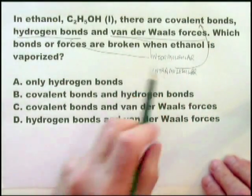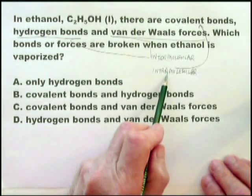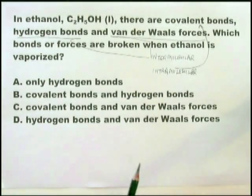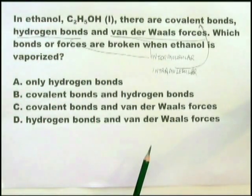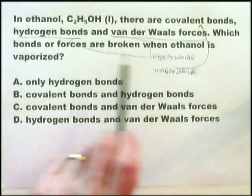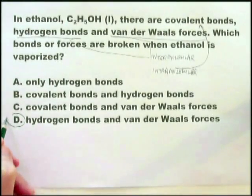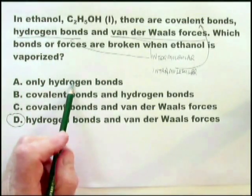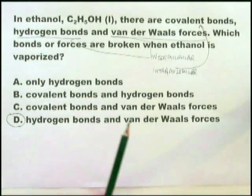Intermolecular refers to the bonds and forces between molecules. Intramolecular refers to the bonds within molecules — covalent bonds are intramolecular. So it's easy to see what happens when ethanol boils or vaporizes: which bonds or forces are broken? Hydrogen bonds and van der Waals forces. Anything with covalent in it is out. Both hydrogen bonds and van der Waals forces are broken when chemicals either melt or boil.